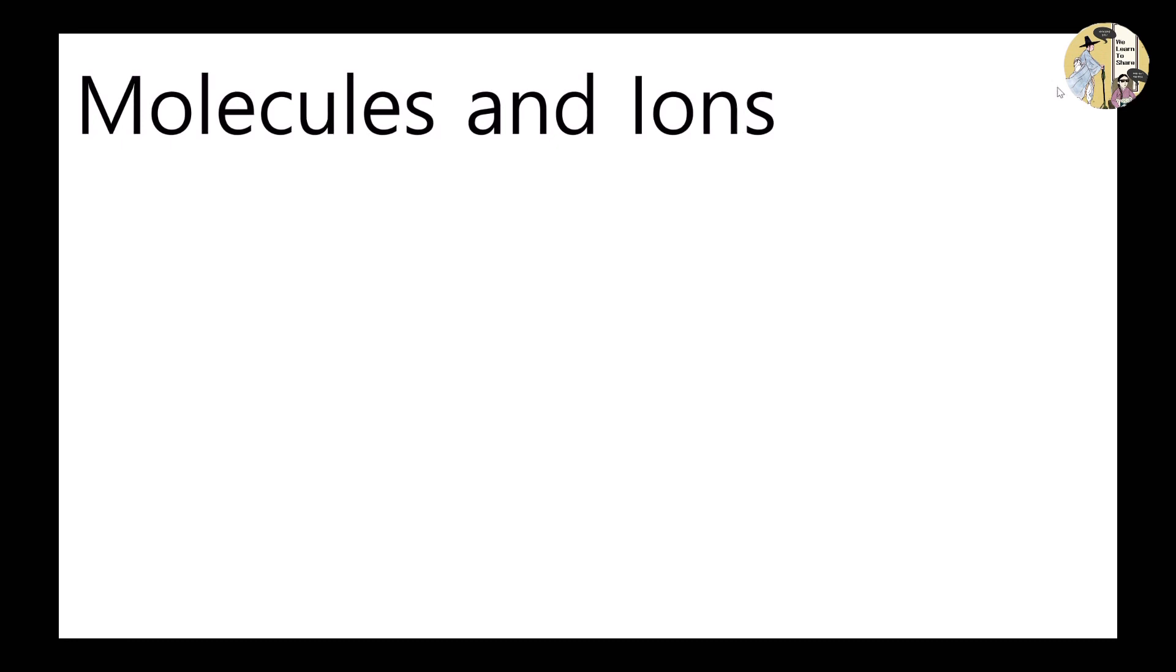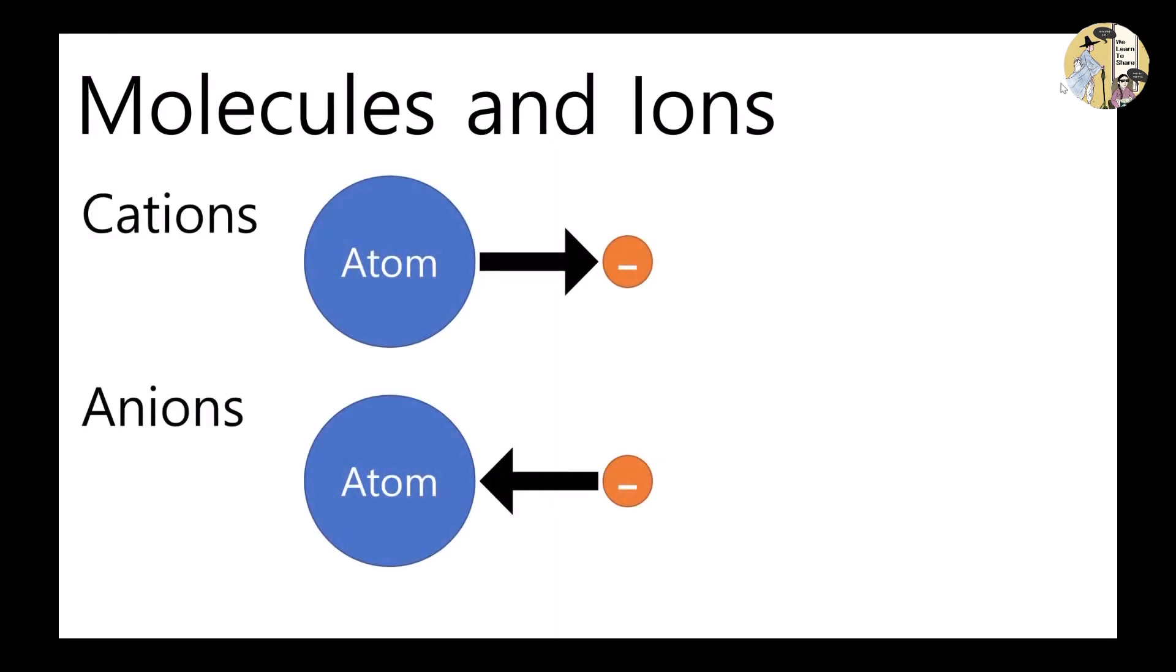Atoms can form another type of complex called ions. Cations or positive ions are formed when metal atoms lose electrons. Anions or negative ions are formed when non-metal atoms gain electrons. The number of protons in the nucleus does not change in the formation of ions. The charges of ions formed by the atoms of the main group elements can be predicted by applying this principle. Atoms that are close to a noble gas in the periodic table form ions that contain the same number of electrons as the neighboring noble gas atom.